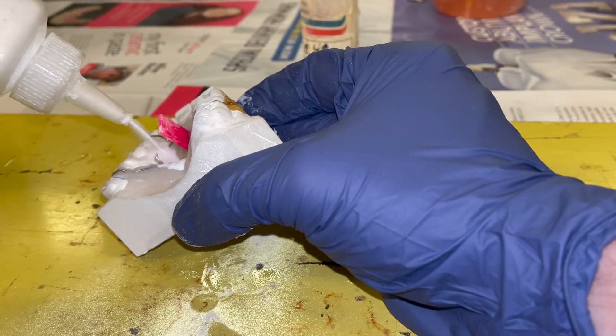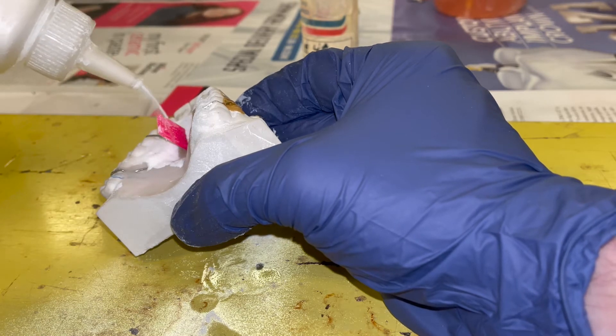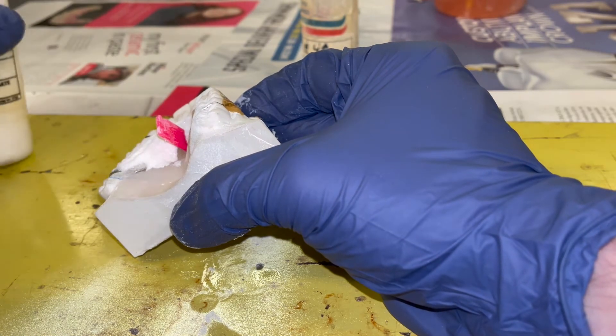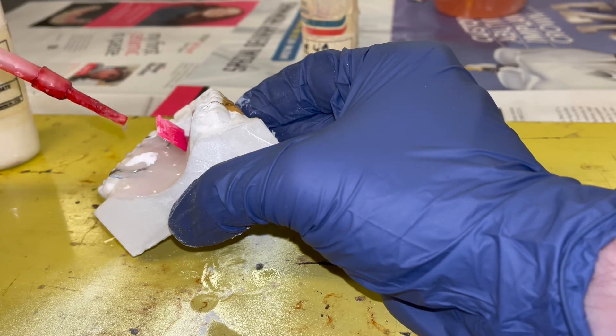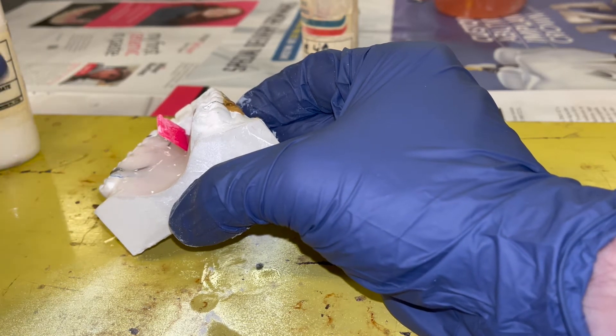The lateral walls are the most difficult area to build up because the acrylic will slump towards the palate. So you have to use gravity to your advantage and always tilt the model to the side you're adding acrylic.